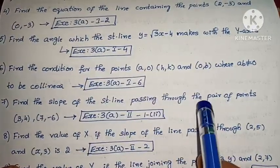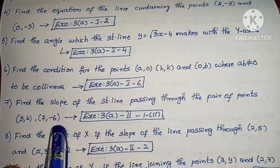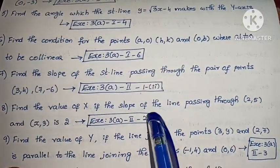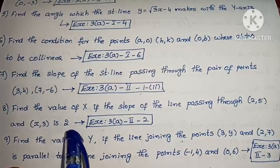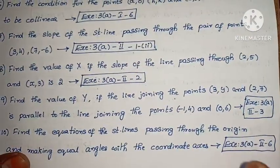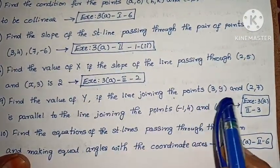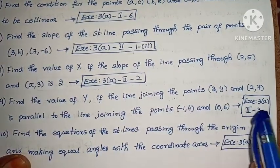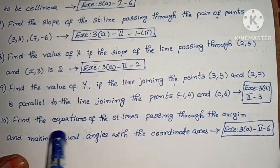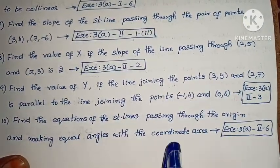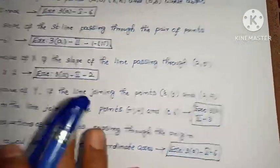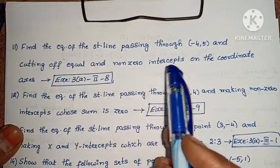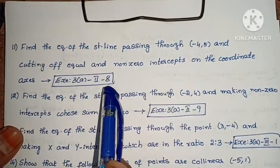Next, find the slope of the straight line passing through the pair of points (3, 4) and (7, -6). Next, find the value of x if the slope of the line passing through (2, 5) and (x, 3) is 2. Next, find the value of y if the line joining the points (3, y) and (2, 7) is parallel to the line joining the points (-1, 4) and (0, 6). Next, find the equations of the straight line passing through the origin and making equal angles with the coordinate axis. Next, find the equation of the straight line passing through (-4, 5) and cutting off equal and non-zero intercepts on the coordinate axis.